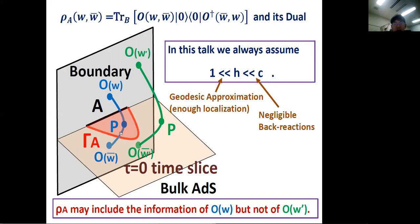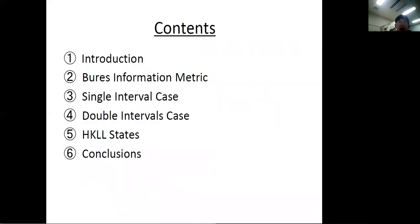So ρ_A may include information about the operator at the blue point inside the wedge, but not about the green operator outside. This is what we want to calculate. The talk will proceed through the definition of information metric, basic single interval examples, the double interval case with connected/disconnected phase transition, and finally HKL states.